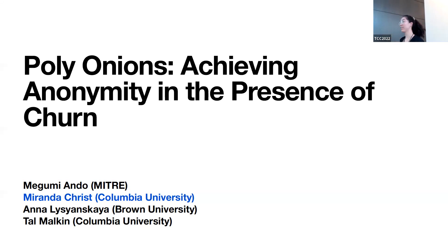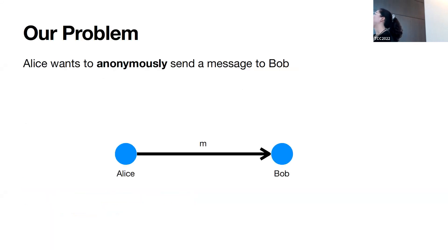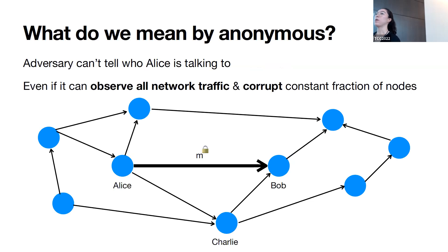The next talk is 'Poly Onions: Achieving Anonymity in the Presence of Churn,' presented by Miranda, joint work with Megumi Ando, Alice Scanska, and Tal Malkin. Alice wants to anonymously send a message to Bob. She can't directly send her message — even if encrypted, an adversary observing network traffic would see a packet going from Alice's server to Bob's server. More precisely, anonymity means an adversary cannot tell who Alice is talking to even if it observes all network traffic and corrupts a constant fraction of the nodes.